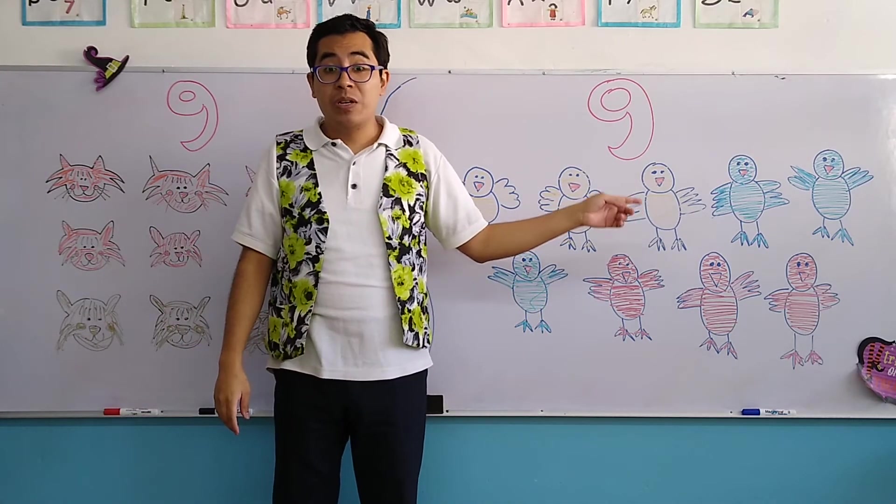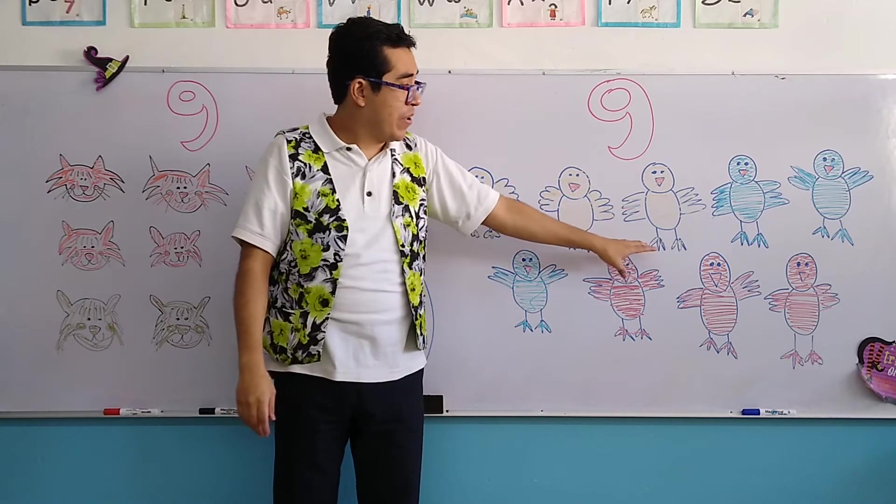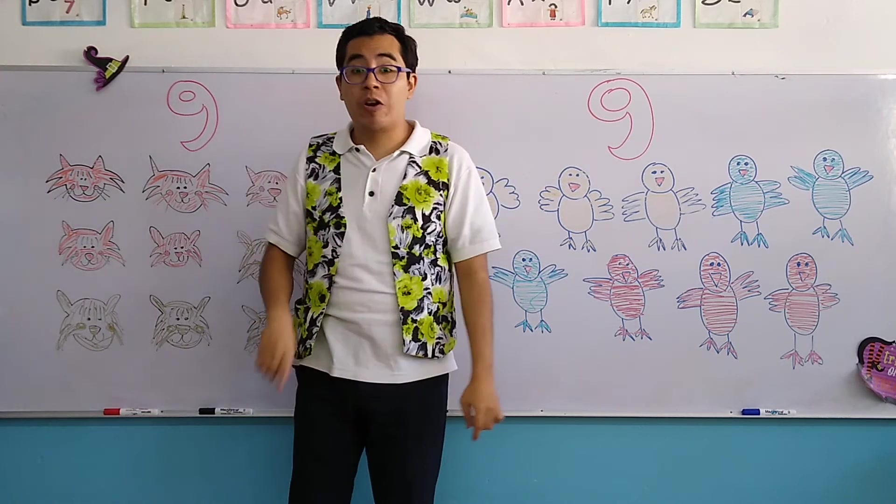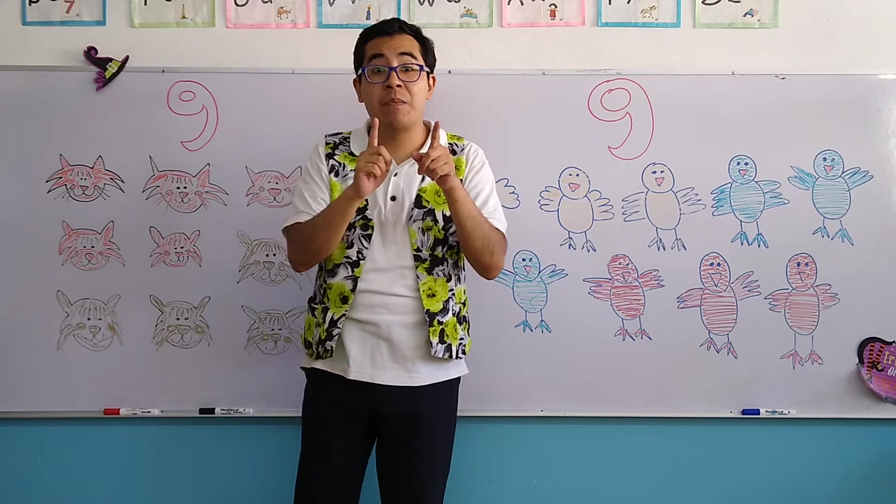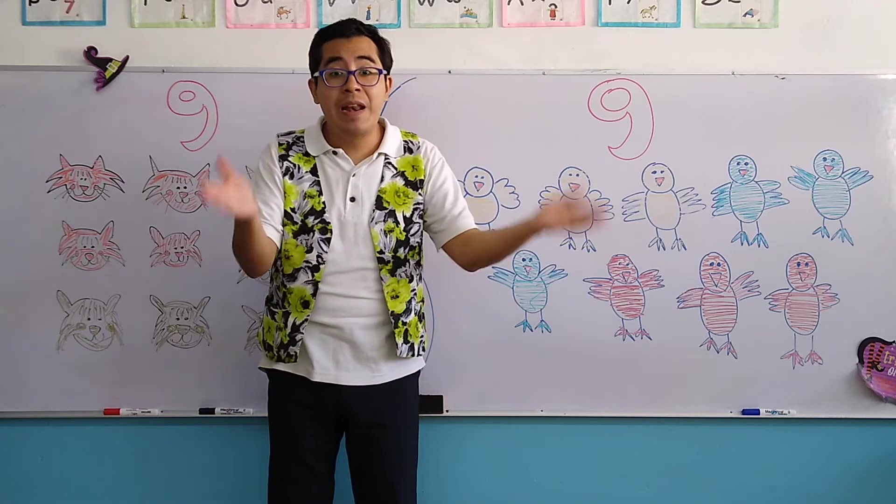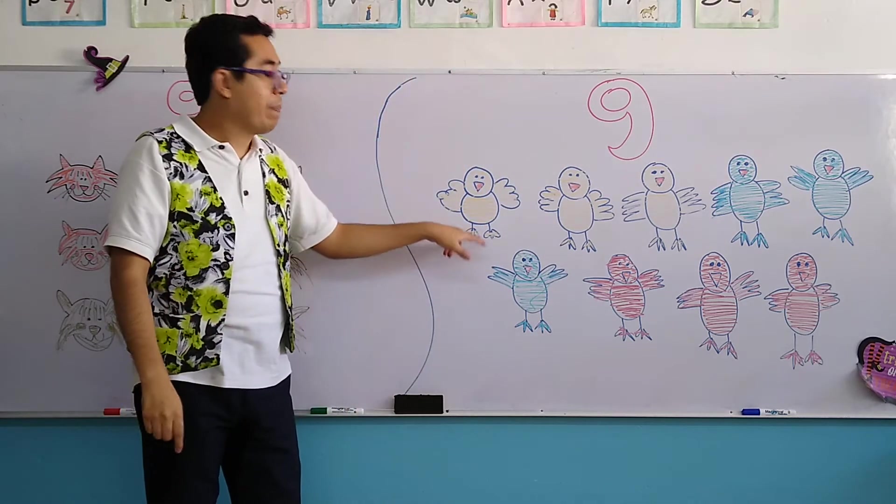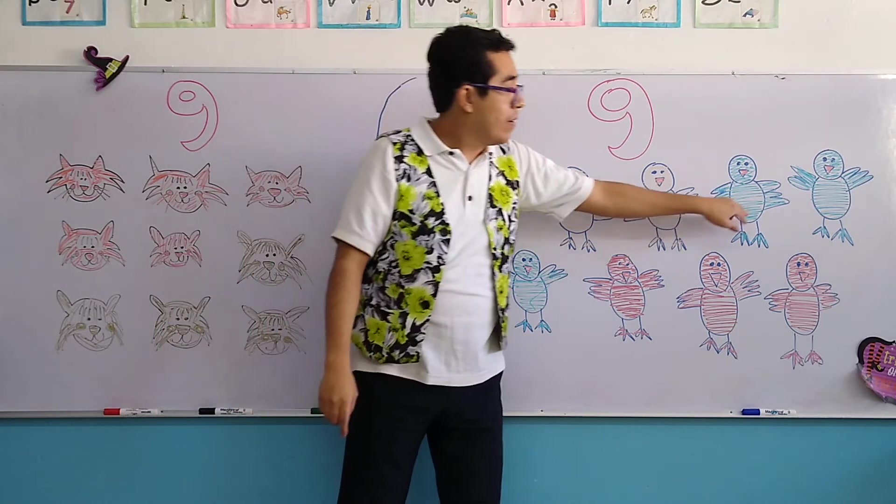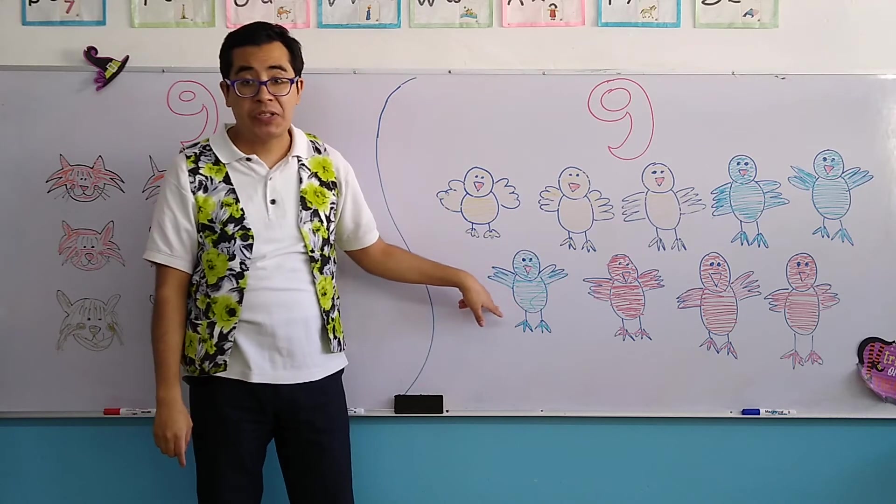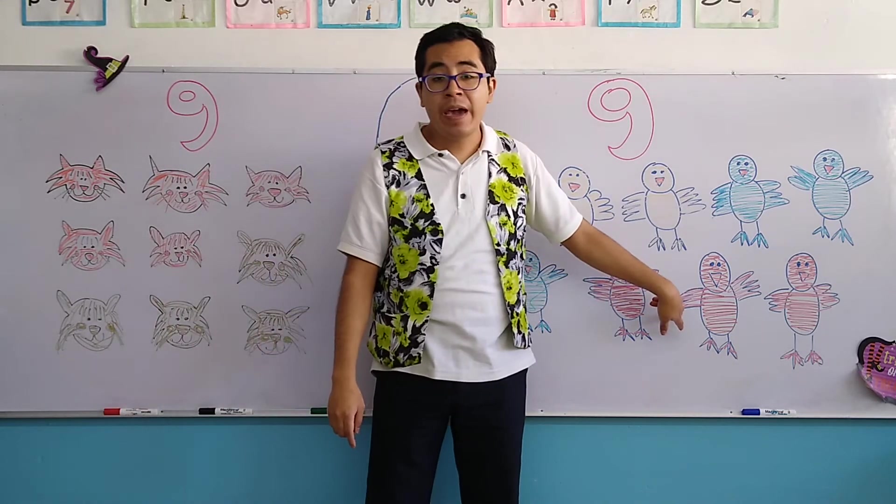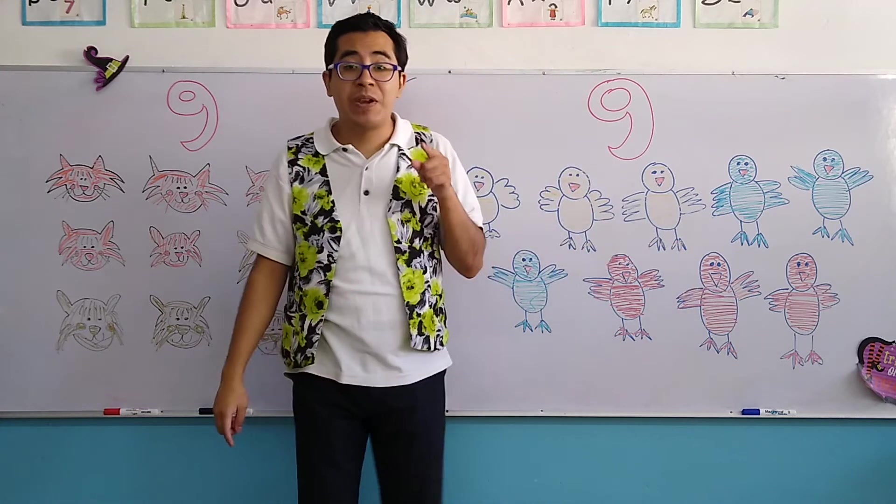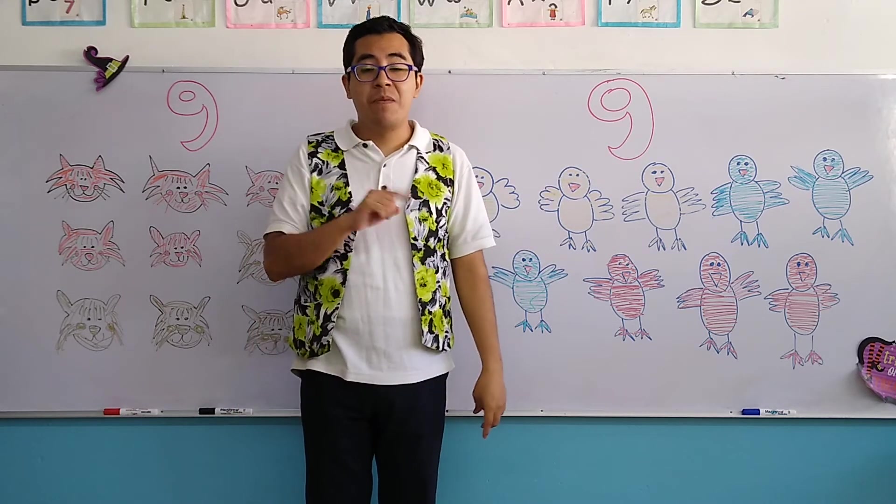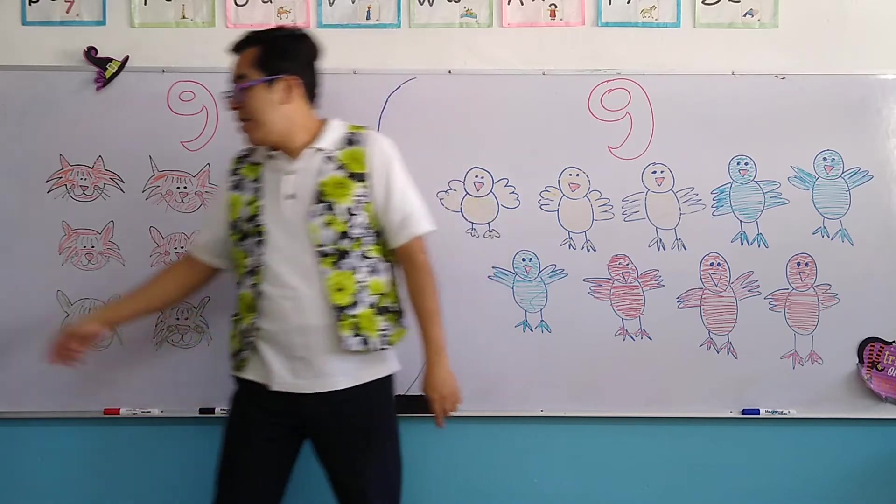Now remember, we have to count. We have to see how many birds appear here, so we remember the number that is right on top of them. So let's start counting. For this I require your help, and you have to repeat them loudly. Let's start. 1, 2, 3, 4, 5, 6, 7, 8, and 9. So the number that appears on top of the birds is number 9. Remember, number 9 looks like a balloon.